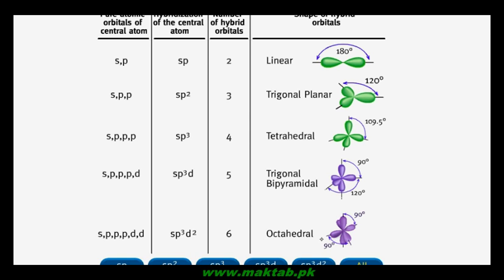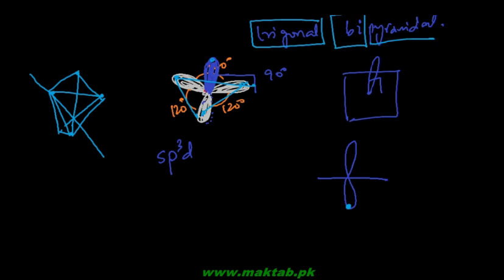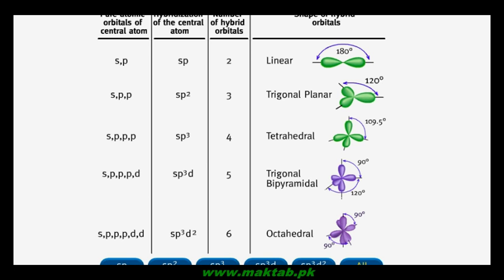For the octahedral structure: there is a plane in which there are four lobes each at 90 degrees to each other — positions 1, 2, 3, and 4 in the plane. Then one lobe comes out above the plane and one goes below the plane. If you join all six points you get an octahedral shape. That is why we call this sp3d2 hybridization an octahedral geometry.